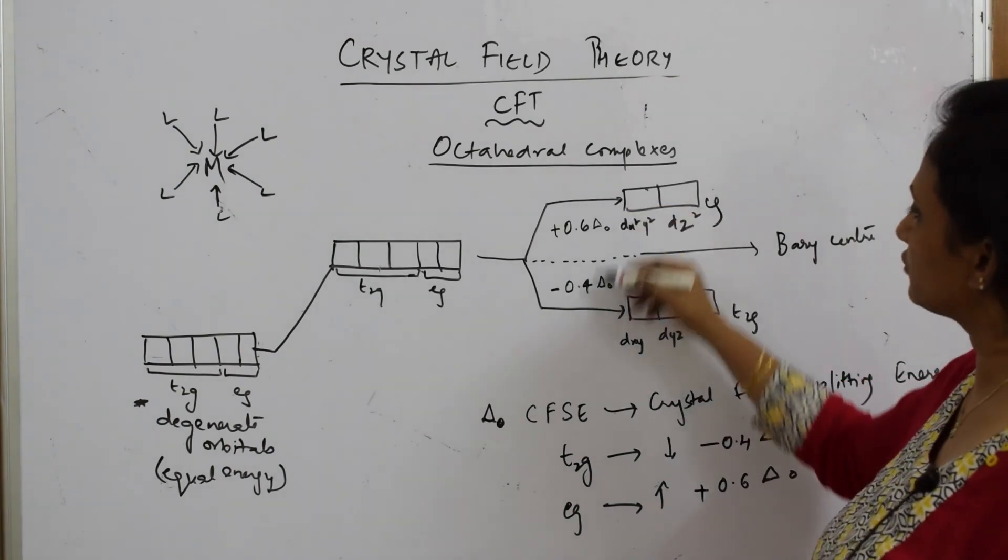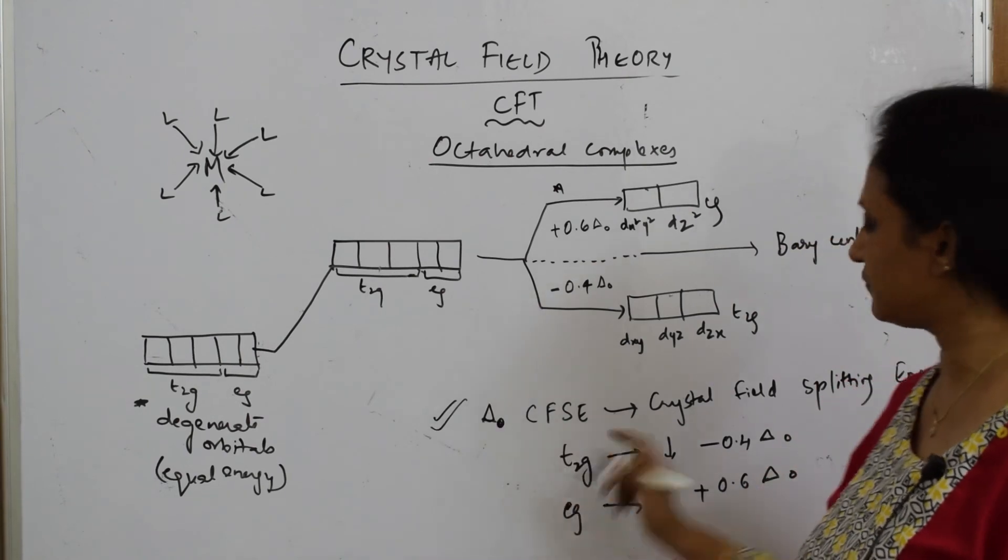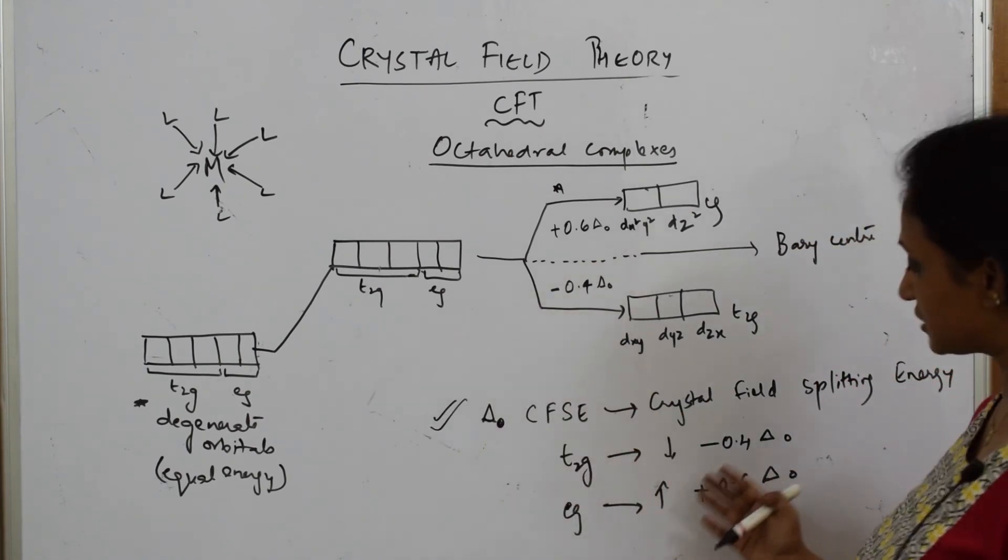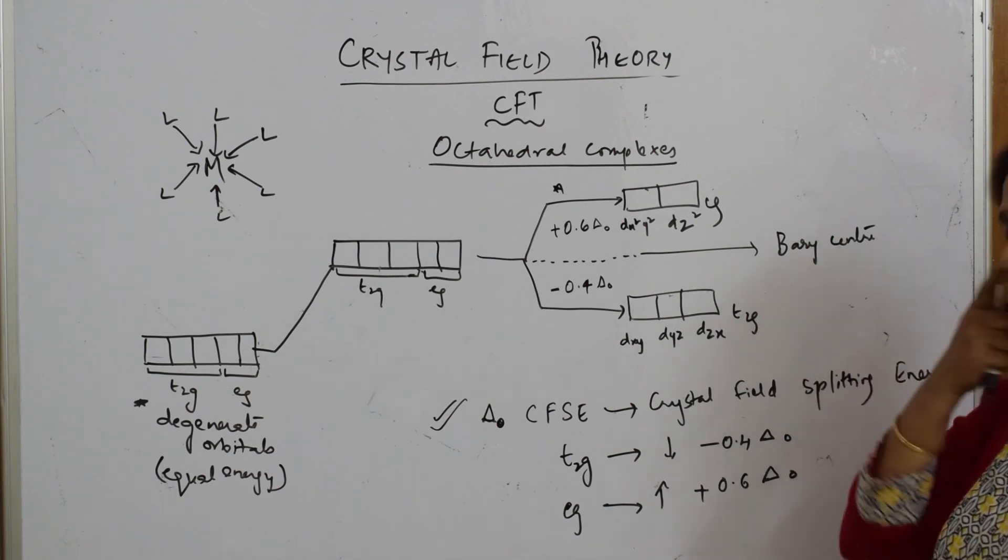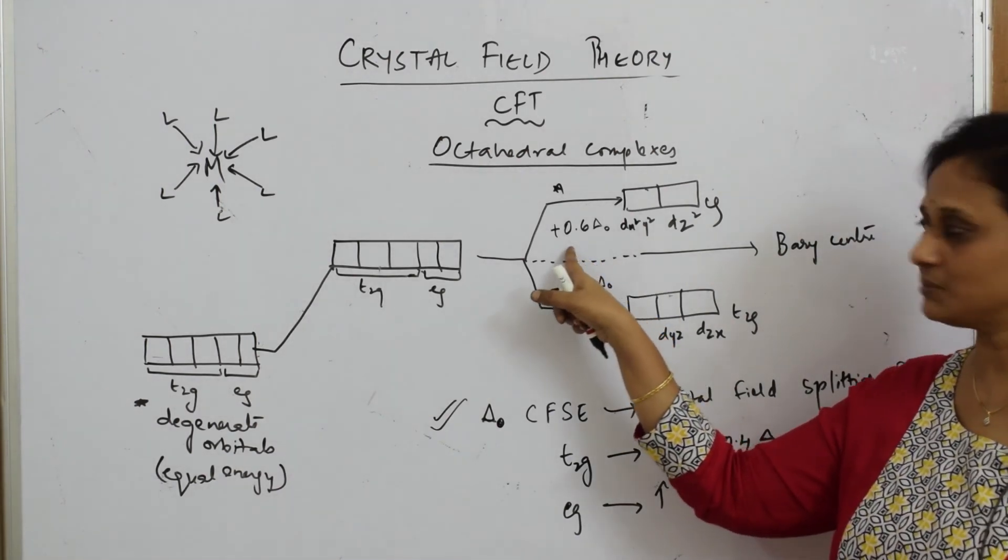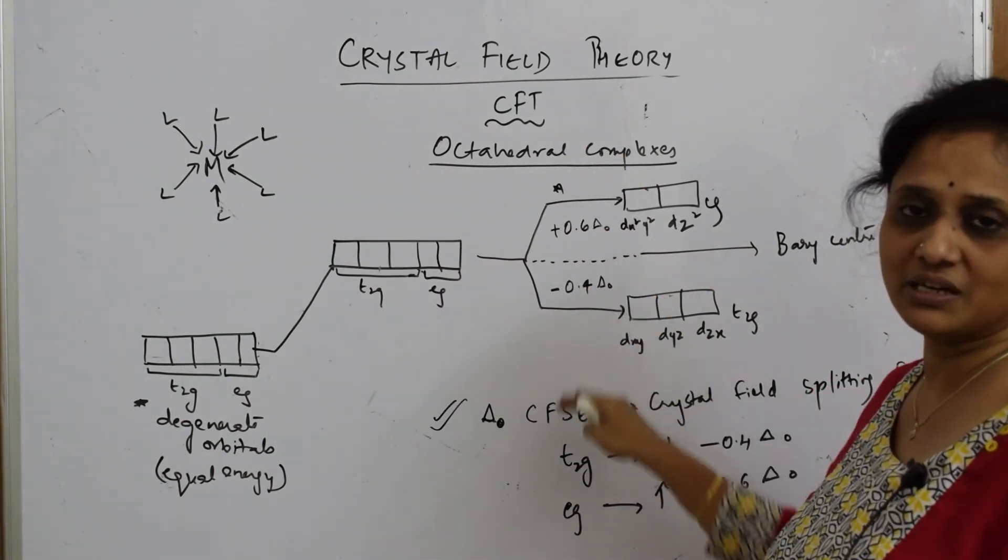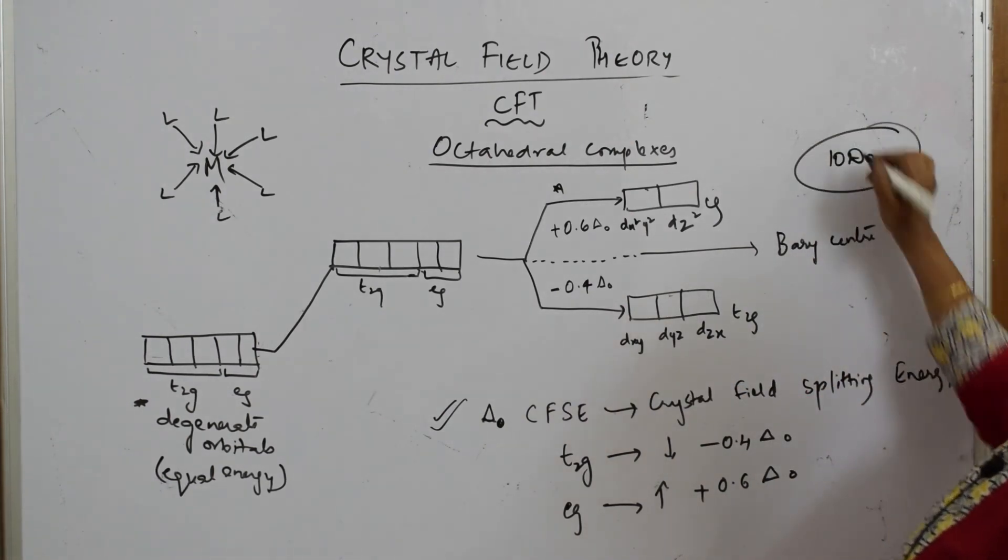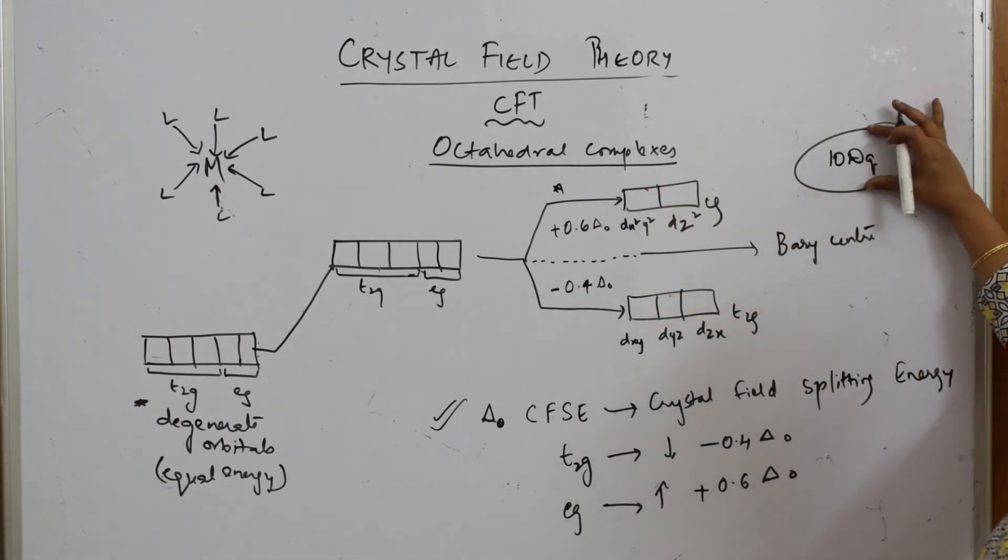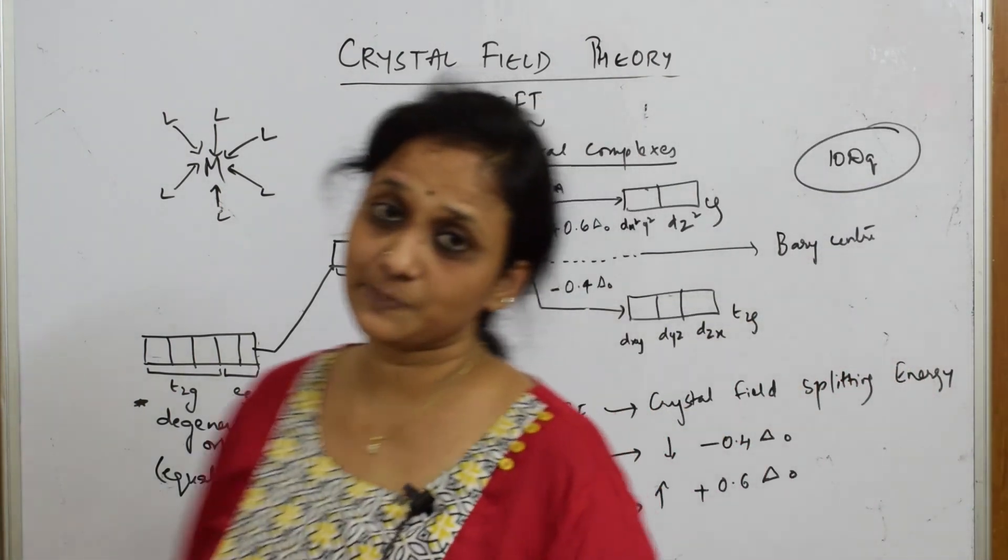Next, you have to write what is CFSC - the definition. After writing CFSC, what is the difference? How much are you showing? This has increased by +0.6, this is decreased by -0.4. Plus means increased by that much, minus means decreased. The total is equal to 10 dq - this is your unit. The total is 10 dq, but higher by 0.6, lower by 0.4.